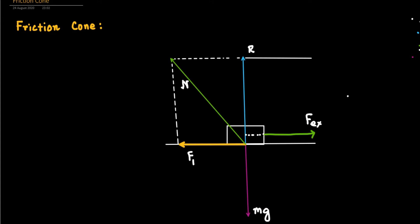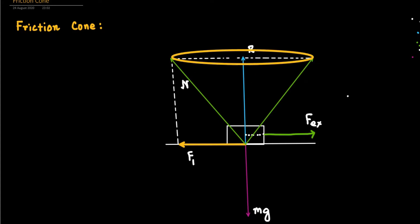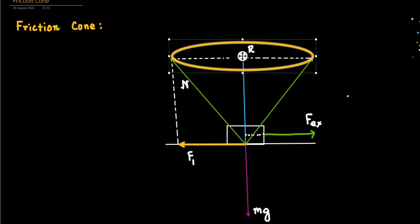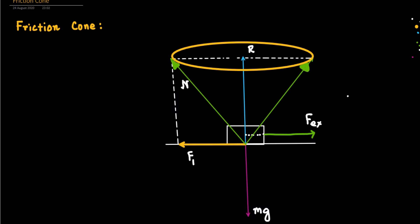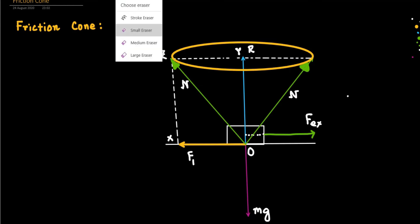We can extend the slant to the other side — this becomes the radius of the circular base of the cone. We can then draw the circular cross-section of an inverted right circular cone. N is the slant of this cone and also the resultant force. O is the point from which the weight mg acts; R acts along OY, the resultant N acts along OZ, and limiting friction FL acts along OX.